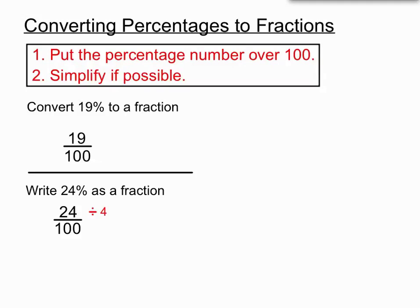We could type it into our calculator and press equals to get the simplest version of 24 over 100. But we'll divide the top by 4 and the bottom by 4 to simplify that fraction. 24 divided by 4 on the top makes 6, and 100 divided by 4 gives us 25. So 24% as a fraction is 6 over 25.